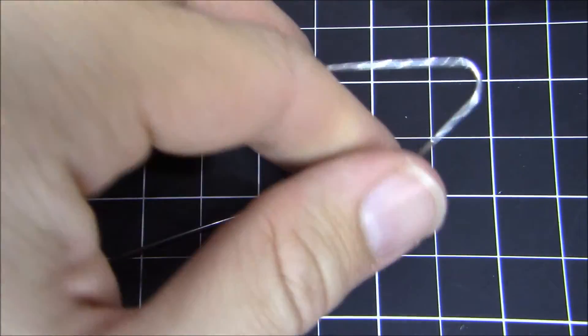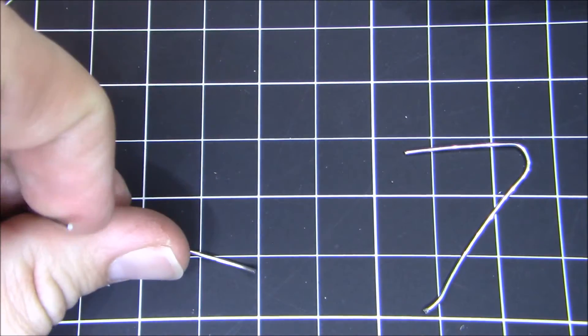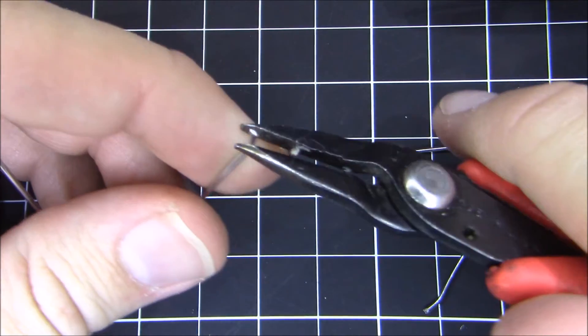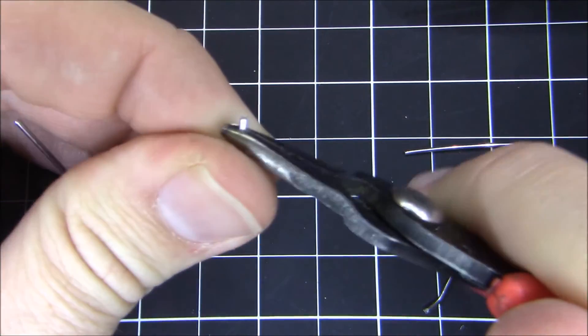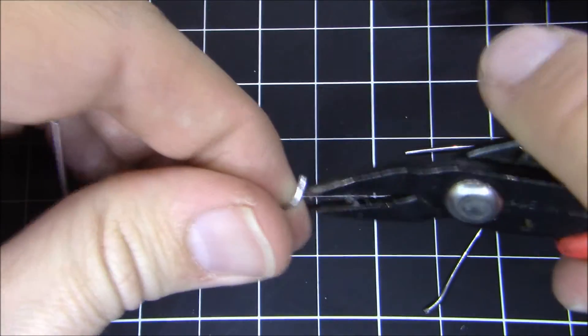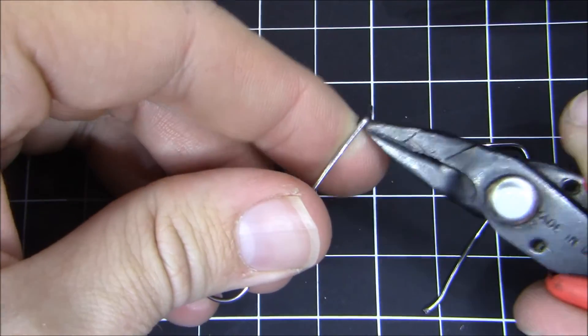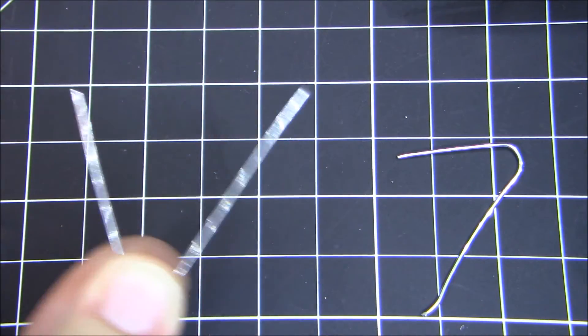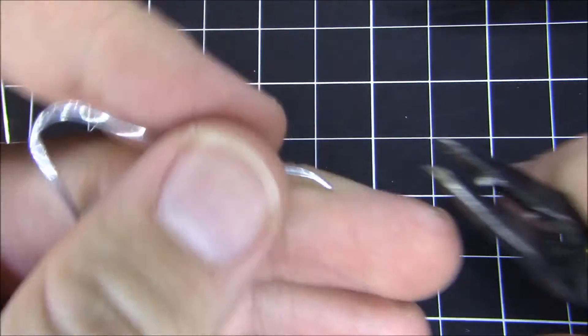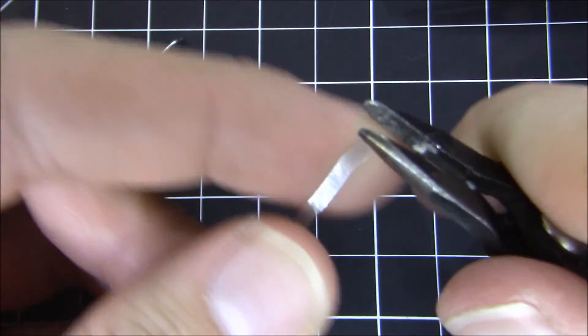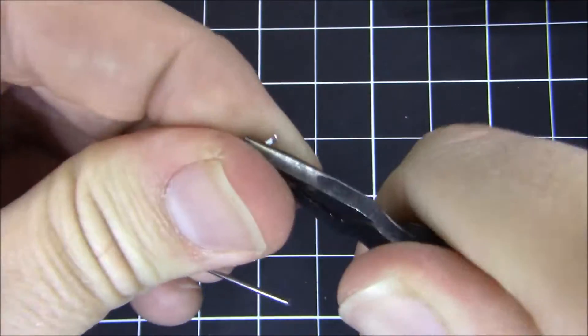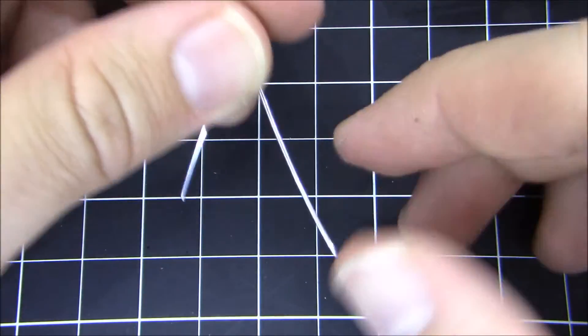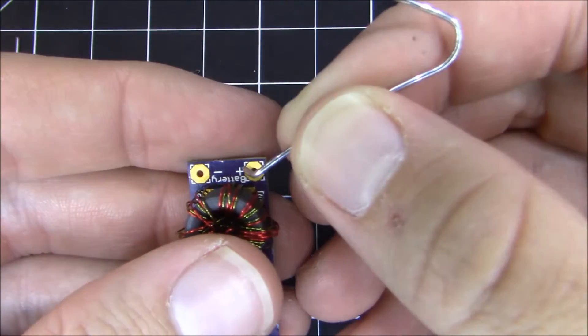And then what we're going to do is take our needle nose pliers and we're going to bend down a little tiny piece of it at a 90 degree angle so that you have a shape kind of like this. So you're going to stick that piece that you bent into the PCB. You want to do the same thing on the other side. Take the end that you cut and bend it at a 90 degree angle down. So you have something like this.